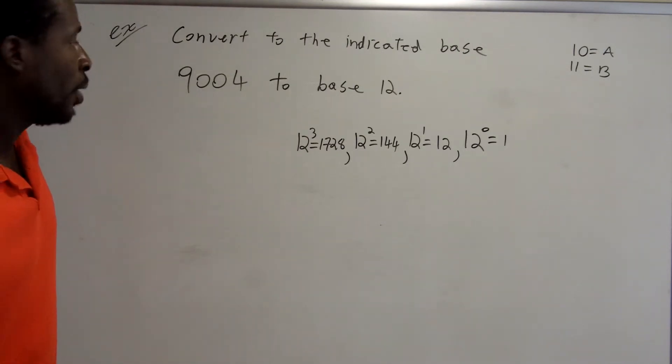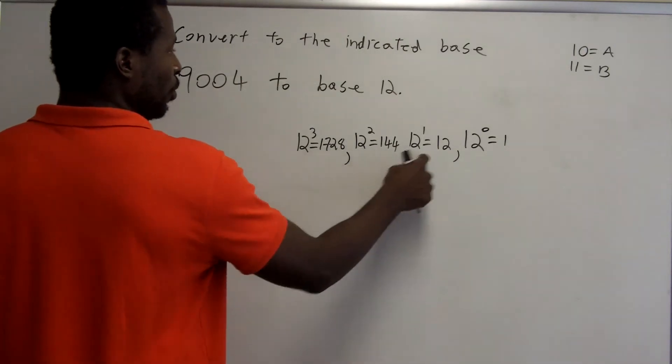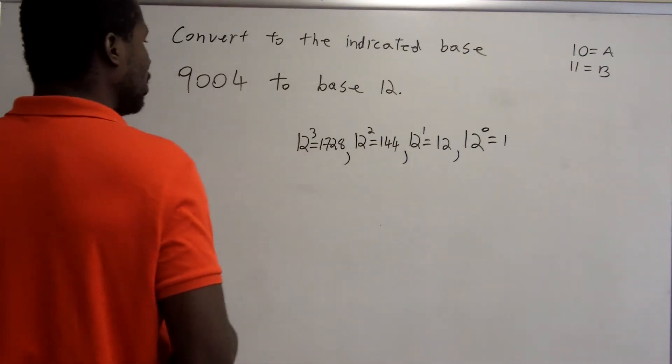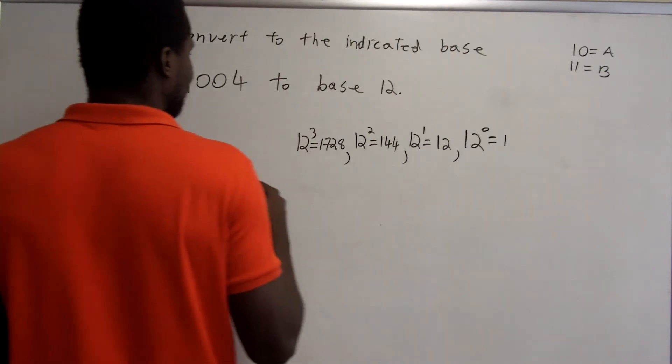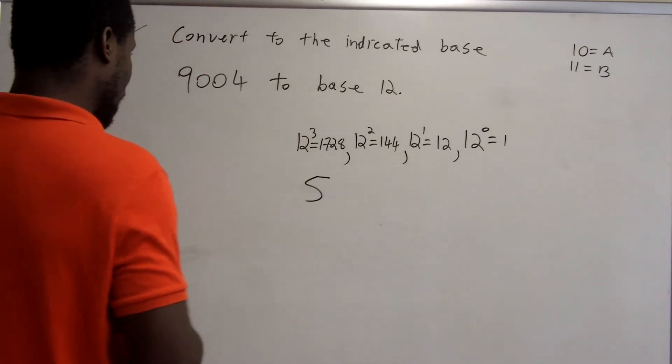So the first thing we want to do, first we know there's a 1, 2, 3, 4 digit number. We need to know how many groups of 1728 there are in 9,004. And there are 5 groups there. There are 5 groups of 1728 in 9,000.